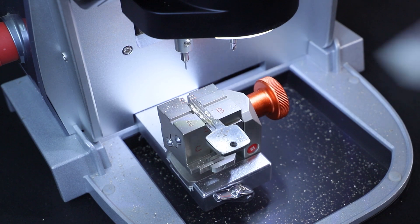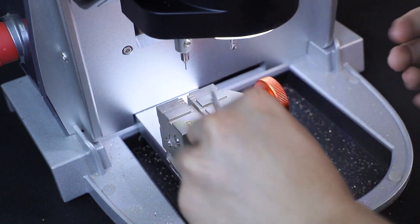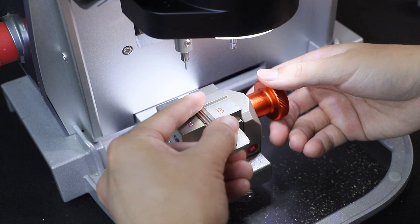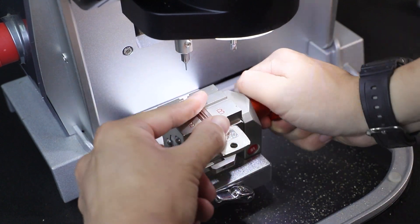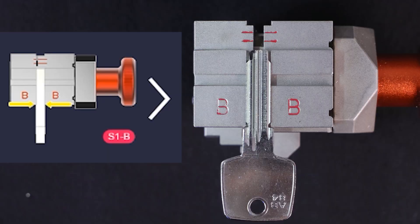After cutting is done, please clean the shavings on the jaw, otherwise it will affect the cutting accuracy. Then fix the other side of the key blank in the side B of S1 jaw shown in the figure.